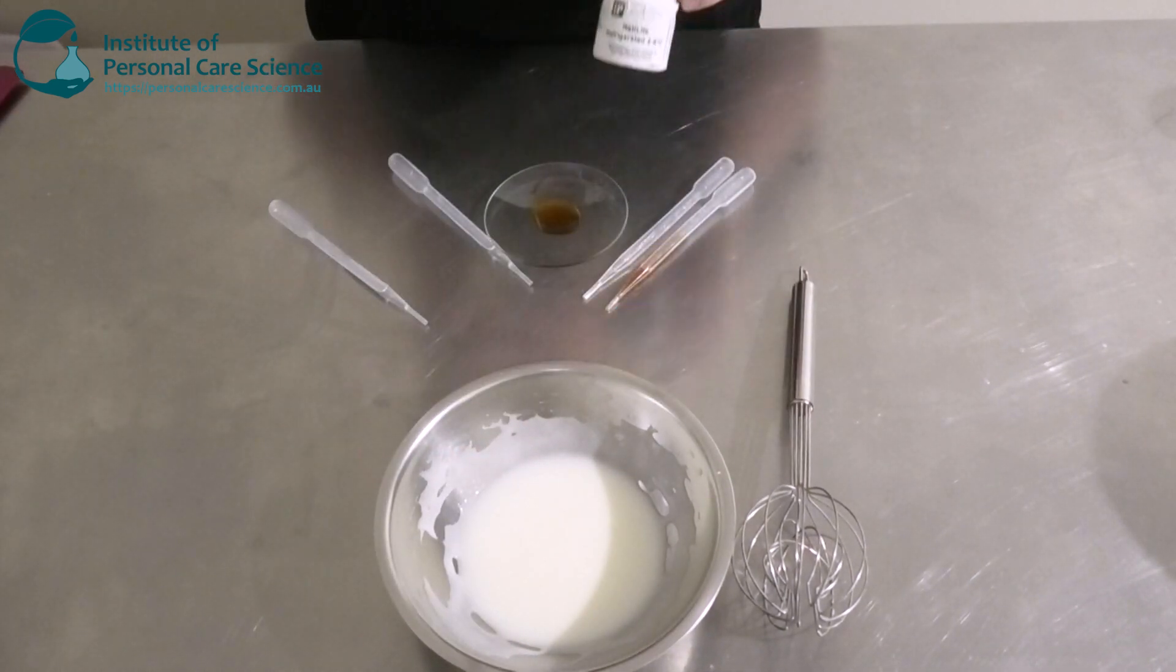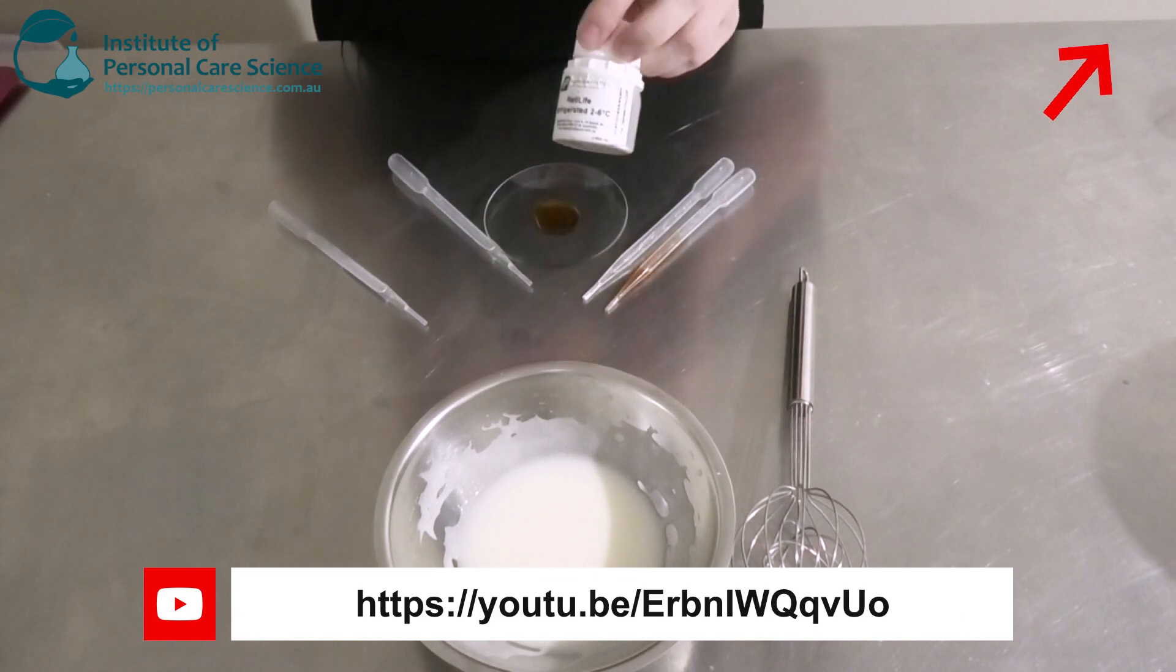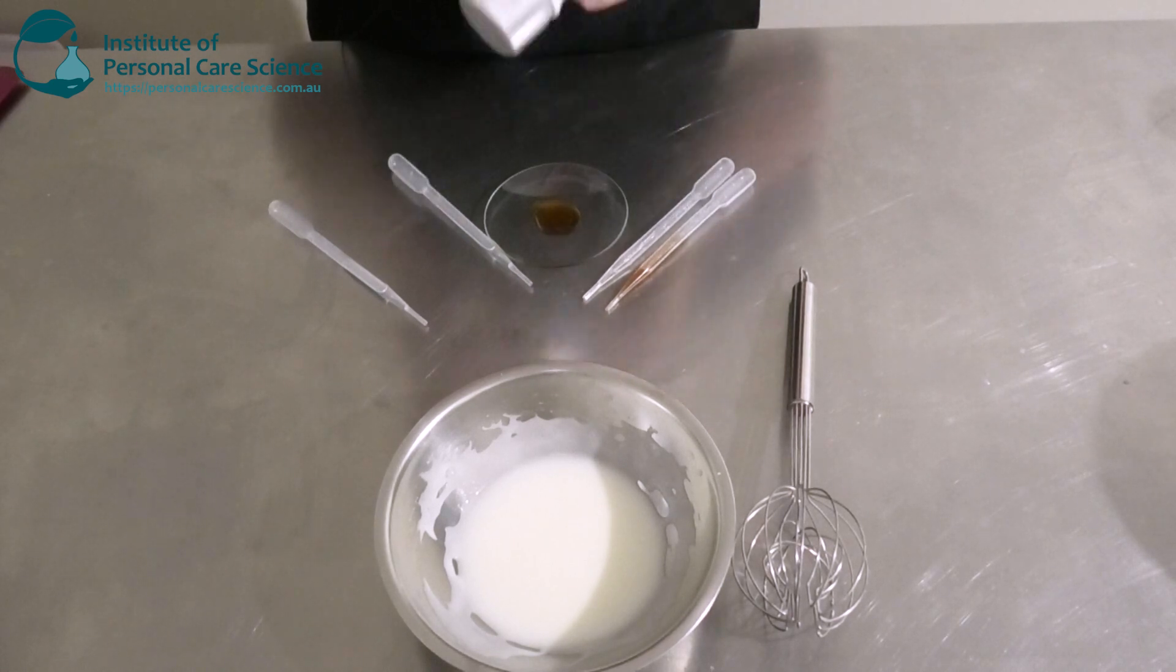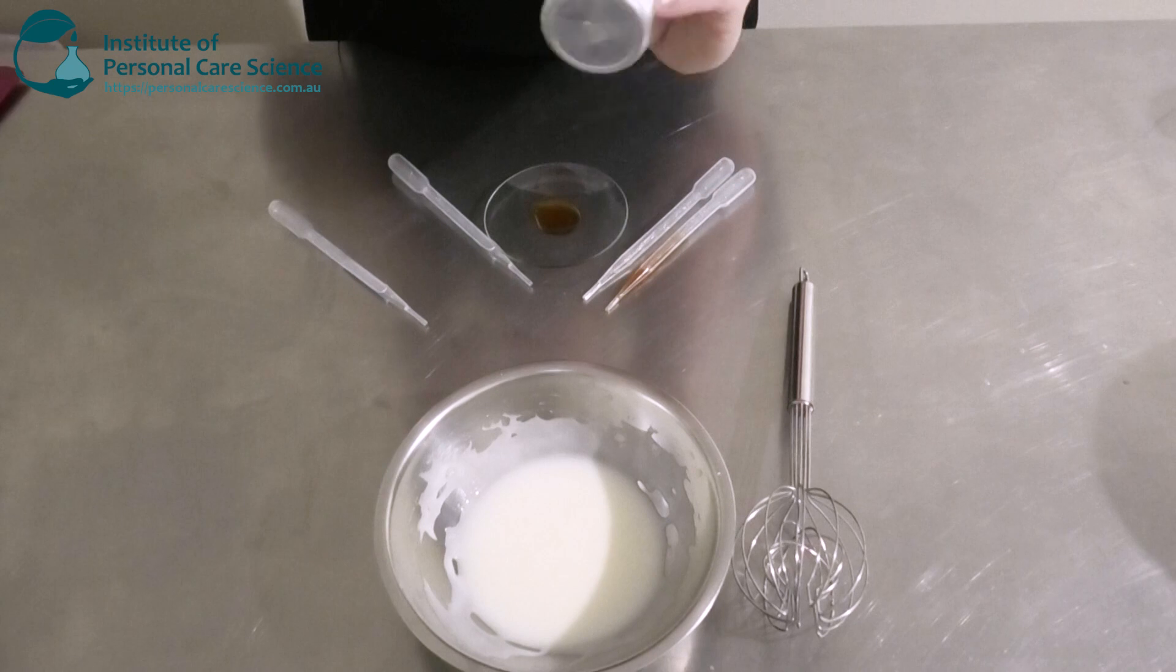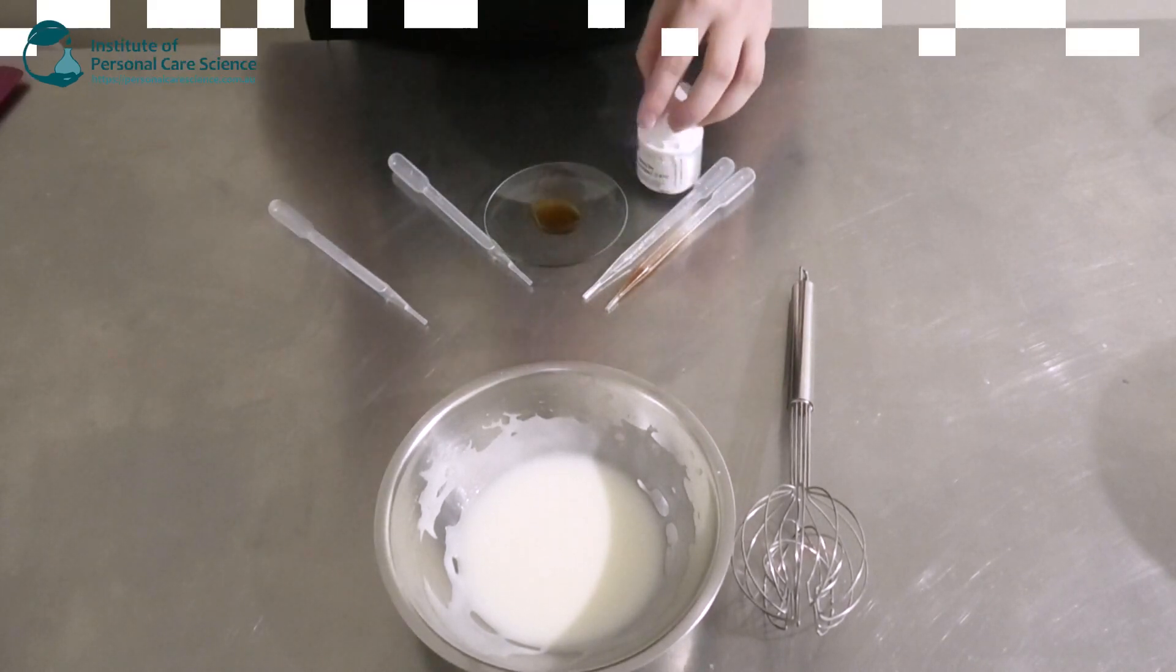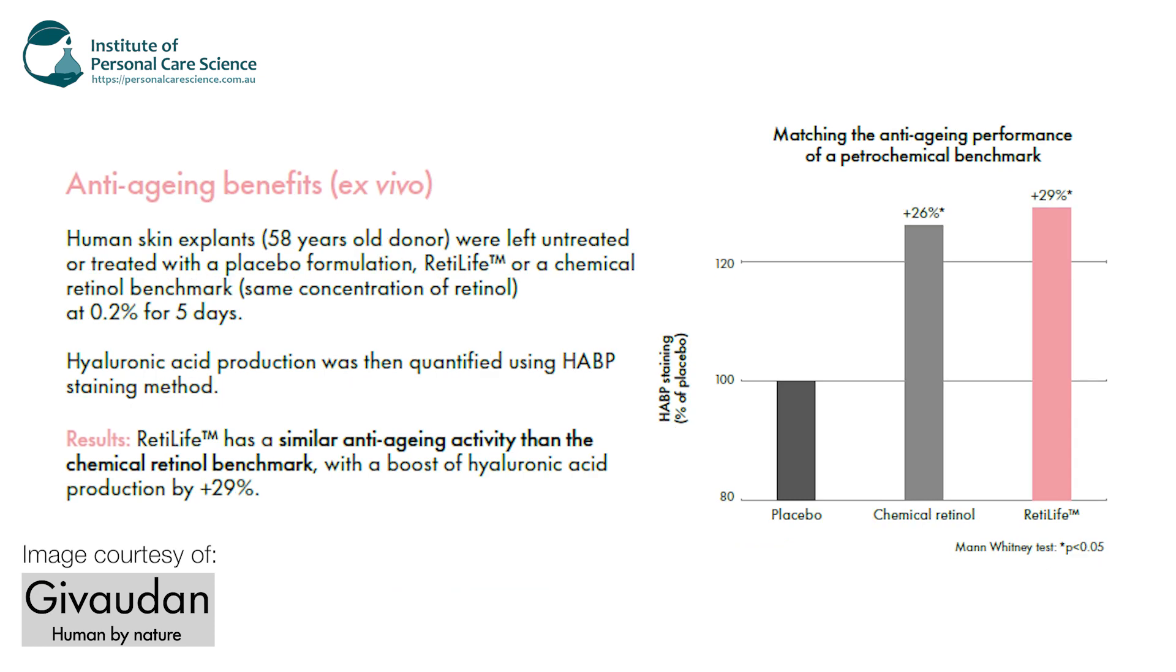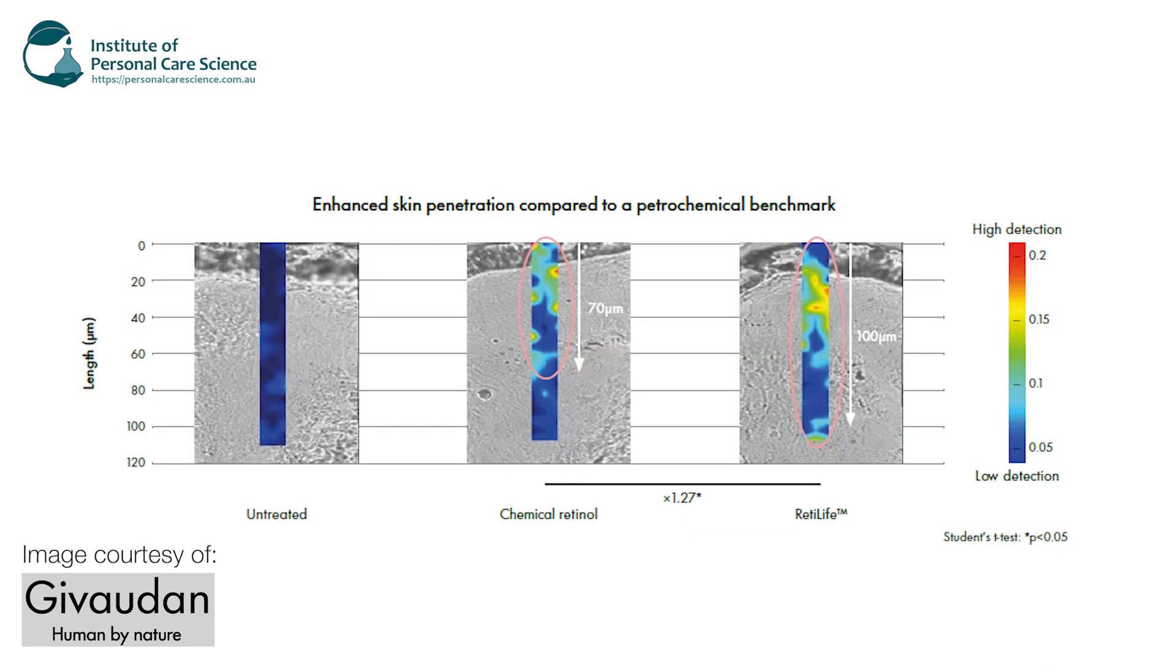It's 100% natural according to the ISO 16128 standard. It's identical to the petrochemical retinol molecule, so it's made from plant sugars. It then goes through a fermentation and distillation process. You can use it in natural claiming products and also organic. It's got great antioxidant benefits as well as your anti-aging as well. It's also got good skin penetration and bioavailability.